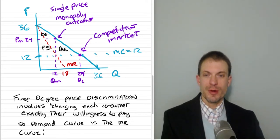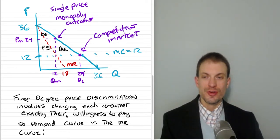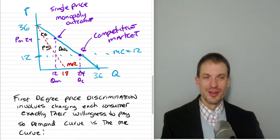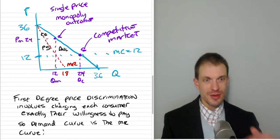First-degree price discrimination involves charging each consumer exactly their willingness to pay. So then the demand curve is the same as the marginal revenue curve. I've got to make this marginal revenue curve lay right over the demand curve. Why? Well if you're charging each person exactly their price, then the additional